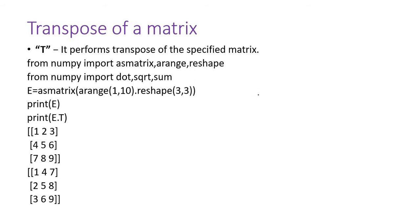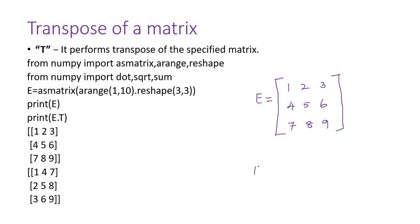Say I have a matrix E: 1, 2, 3, 4, 5, 6, 7, 8, 9. I have a matrix something like this. When I take the transpose of that matrix, the column entries become row entries. So 1, 4, 7 — the first column becomes the first row. The second column, 2, 5, 8, becomes the second row. The third column, 3, 6, 9, becomes the third row.